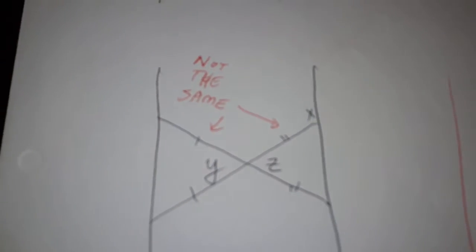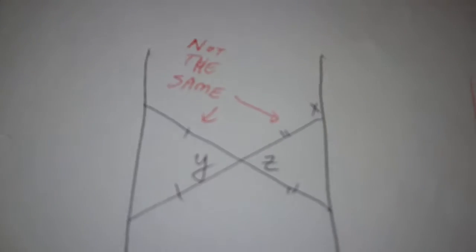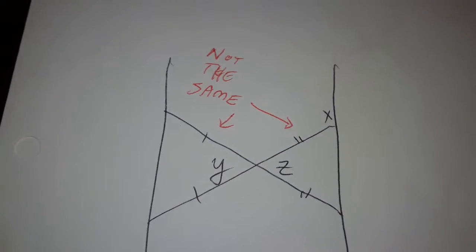Here's an interesting problem. We've got two parallel lines and two lines that intersect, and we've got angles Z and Y.